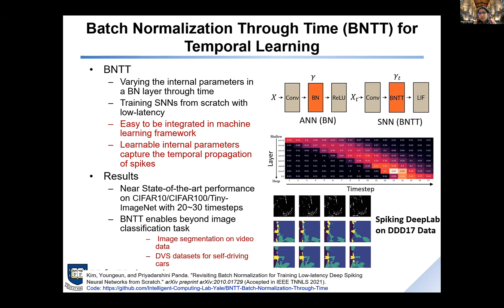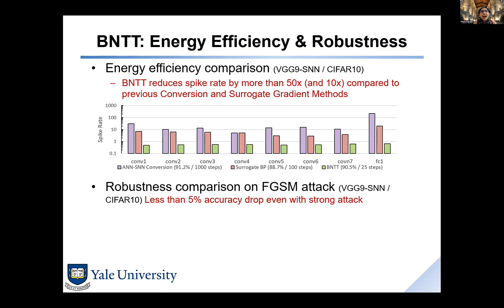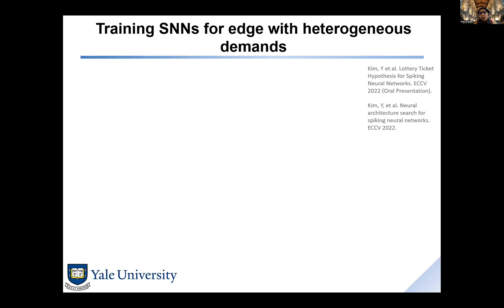The main reason to explore temporal learning algorithms is to get benefits around efficiency and robustness. With BNTT, the spike rate is 50x or 10x lower than conventional methods like conversion or standard surrogate gradient descent. Similarly, in terms of adversarial robustness, integrating temporal learning well makes the BNTT model very resilient towards input perturbations that would otherwise fool the network.